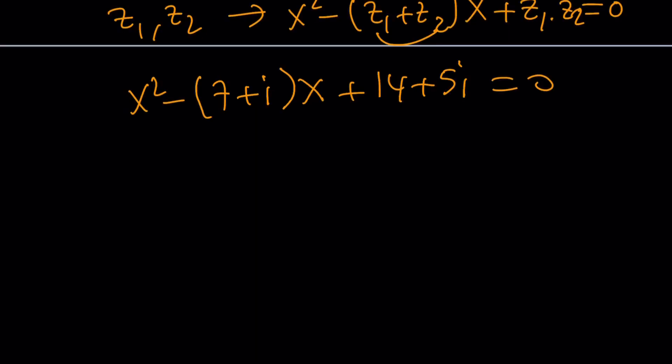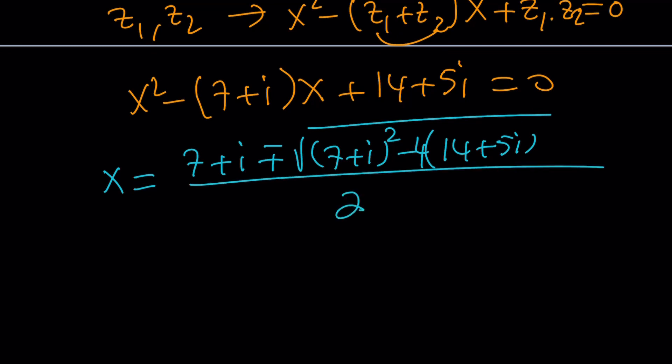So, let's go ahead and write the quadratic formula to find the solutions from here. The solutions are going to be negative B plus minus the square root of B squared minus 4AC. Since A is 1, we're just going to multiply this by 4 and subtract and divide by 2.